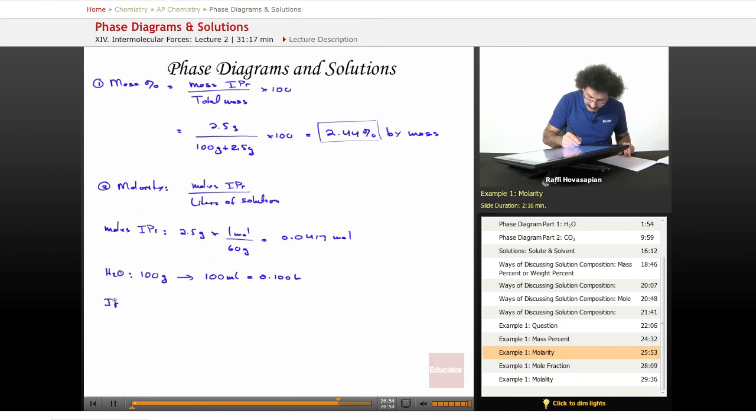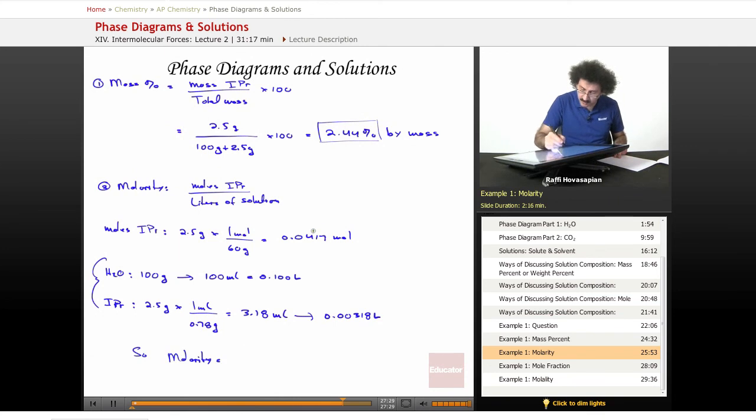Now isopropanol. Here we're doing volume. Isopropanol, we said we have 2.5 grams, and we said that 1 milliliter of that is 0.786 grams. So we have 3.18 milliliters, which is equivalent to 0.00318 liters. Our molarity is equal to the moles 0.0417 mole divided by this plus this, 0.10318 liter, and we end up with 0.404 molarity.